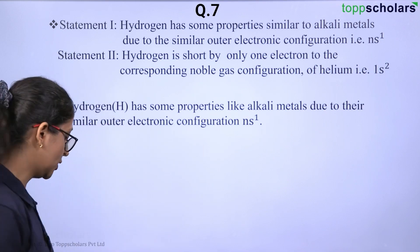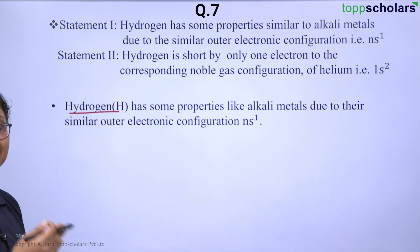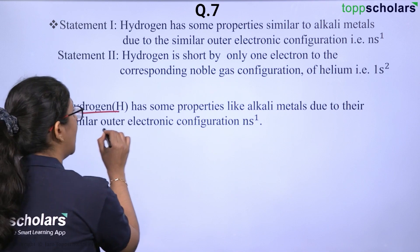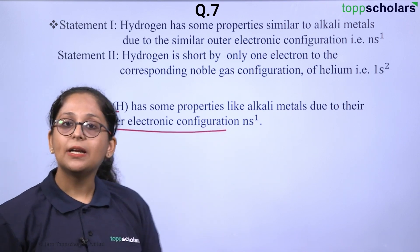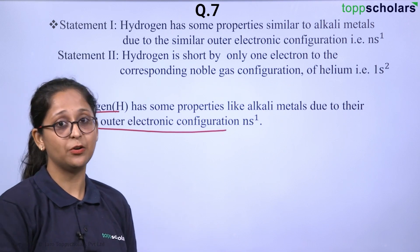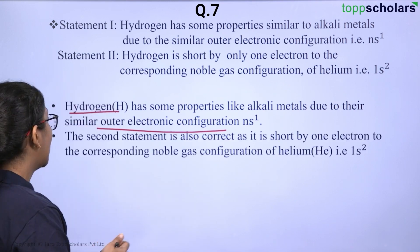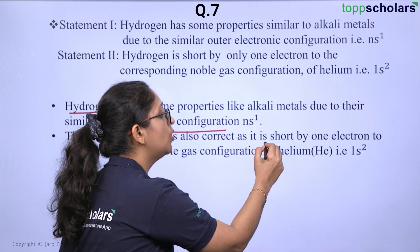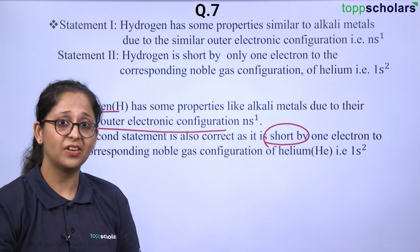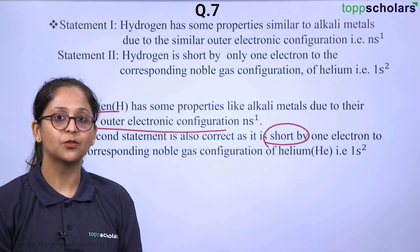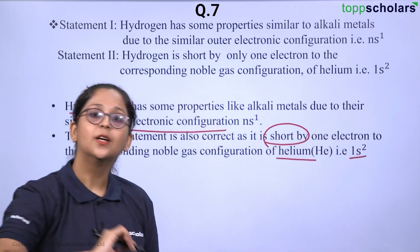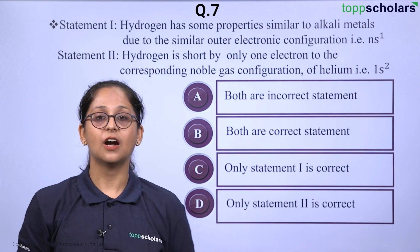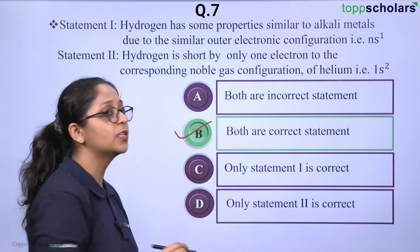Hydrogen has a property which is similar to your alkali metals due to the similar outer electronic configuration. Alkali metals also have the same electronic configuration as hydrogen, that is NS¹. The second statement is also correct because the hydrogen molecule is only short by one electron — if it had that electron it would achieve the noble gas configuration of helium, that is 1S². So both statements are correct. The correct answer is option B: both are correct.